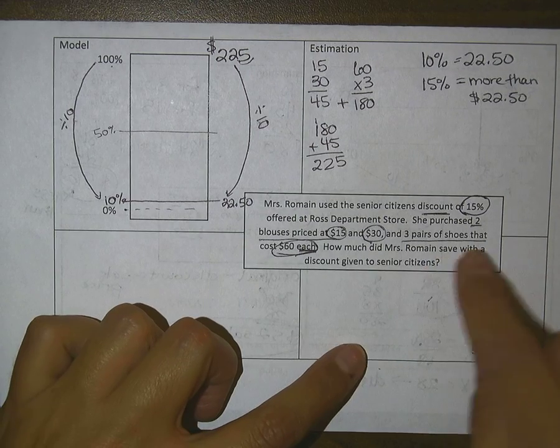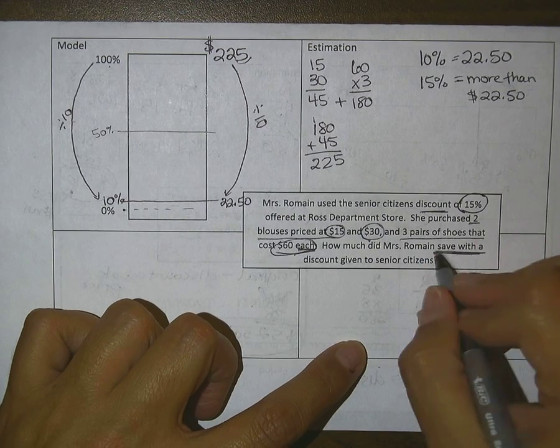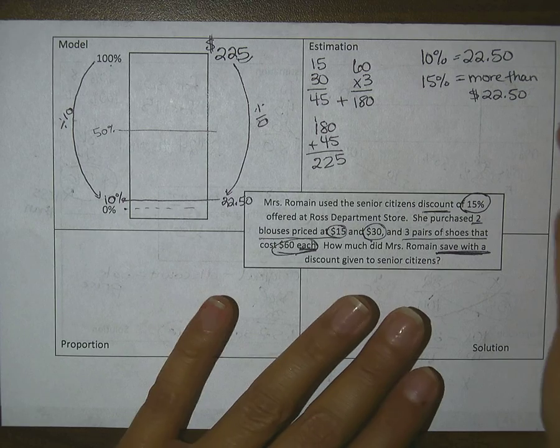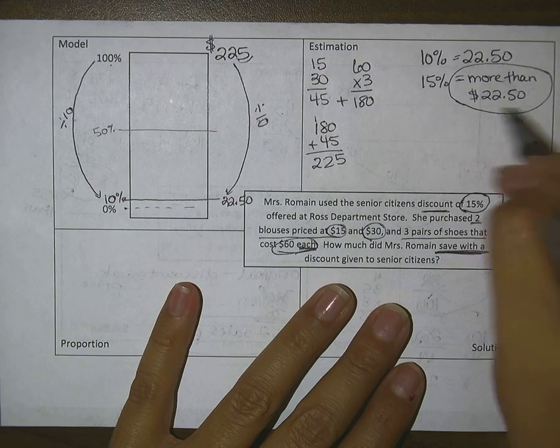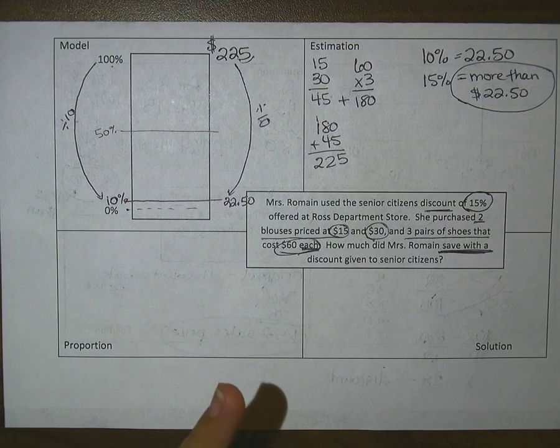Let's look at what the question says. It says how much did Mrs. Romaine save with a discount? So they're not asking for how much she spent, they just want to know what is the discounted amount.